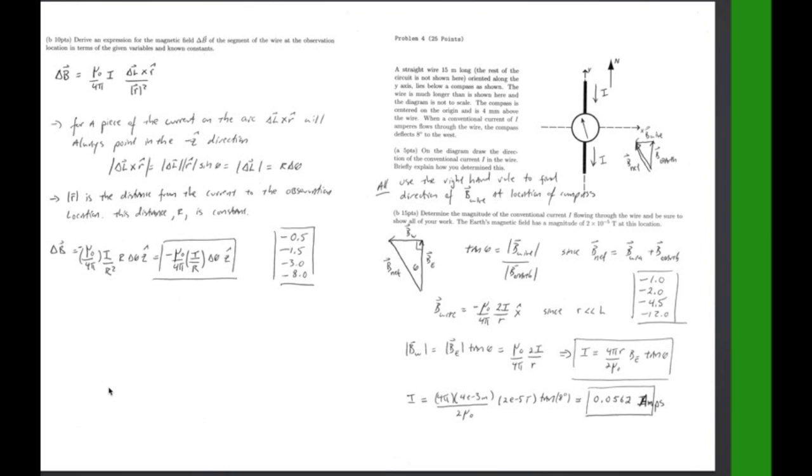First you find theta. You need to do that by taking tangent of theta is equal to the absolute value of B wire over B earth. And this will give you the angle.